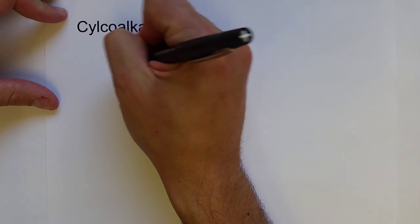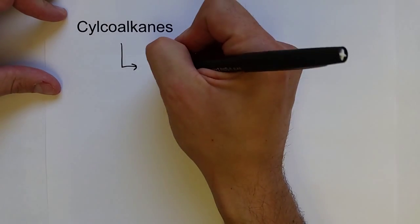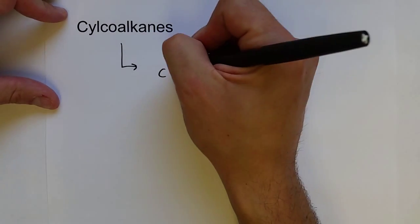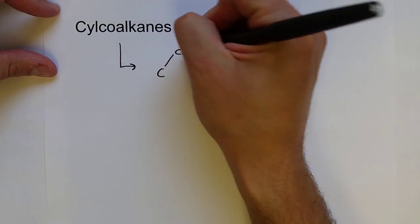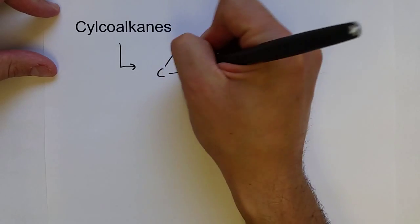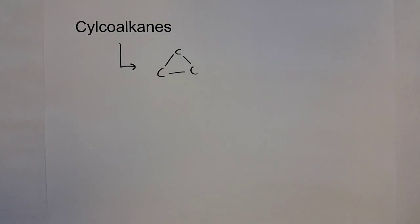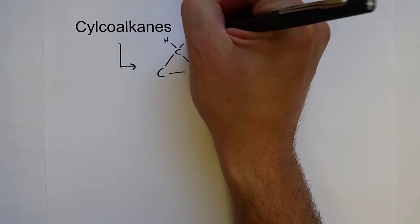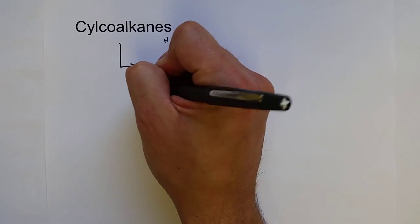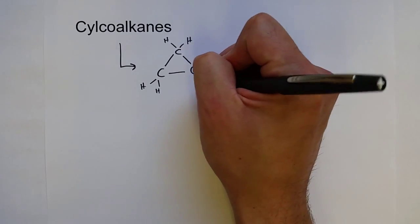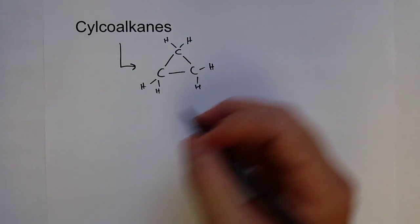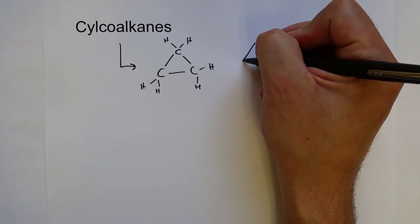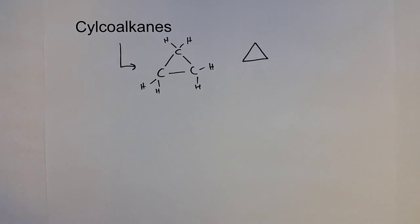So the smallest cycloalkane, and that's what they're called, that can occur is with three carbons. So instead of three carbons being in a straight chain, they actually form a triangle like this. And each of those carbons still needs two hydrogens, so they're each bonded to two hydrogens to get four bonds, always four bonds to carbon. And we can even draw the skeletal formula for this, or the skeletal structure, and it looks like a triangle.